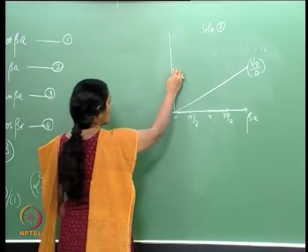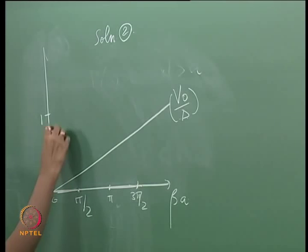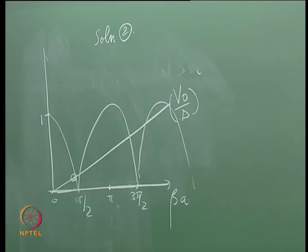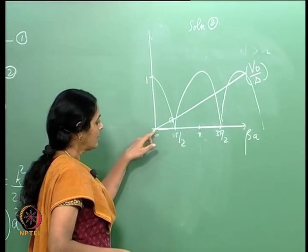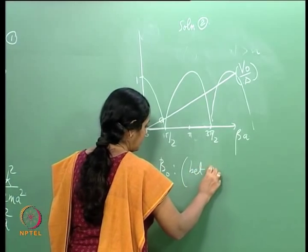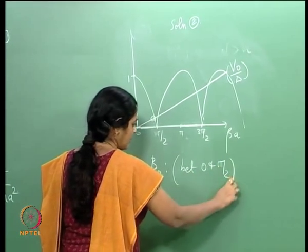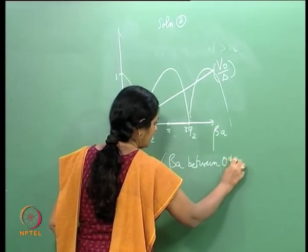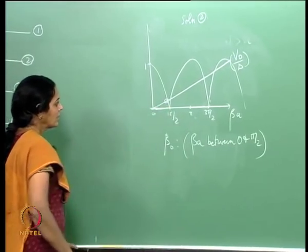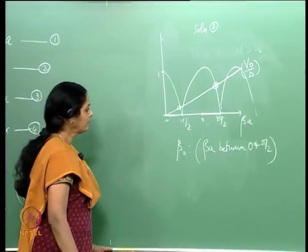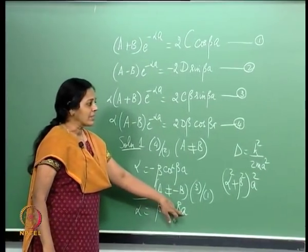There is one possible value of beta a between 0 and pi/2 — call it beta_0. The next solution from alpha = beta tan(beta a) happens between pi and 3pi/2 — call that beta_2. For Solution 1, alpha = -beta cot(beta a), the allowed values of beta a are between pi/2 and pi, 3pi/2 to 2pi, and so on. Plotting |sin(beta a)|, there is one solution between pi/2 and pi — call that beta_1.